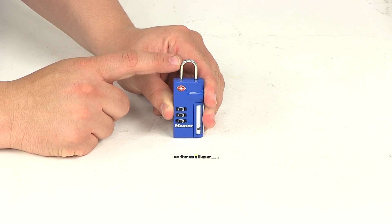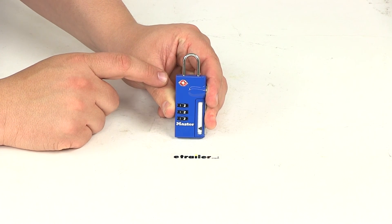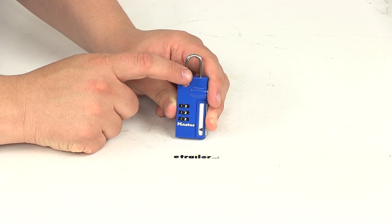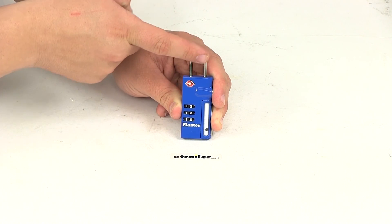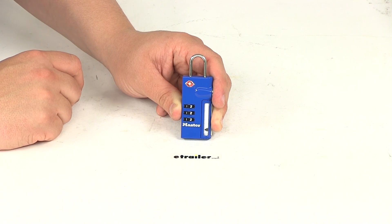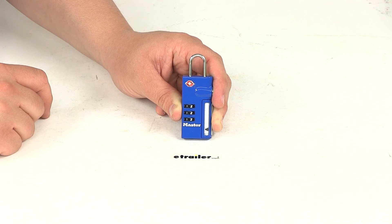When it comes to the shackle diameter, that's going to measure an eighth of an inch. The shackle length, measuring the inside from the top of the lock body to the bottom of the arch of the shackle, that's going to measure three quarters of an inch. Inside to inside going straight across measurement is seven sixteenths of an inch.